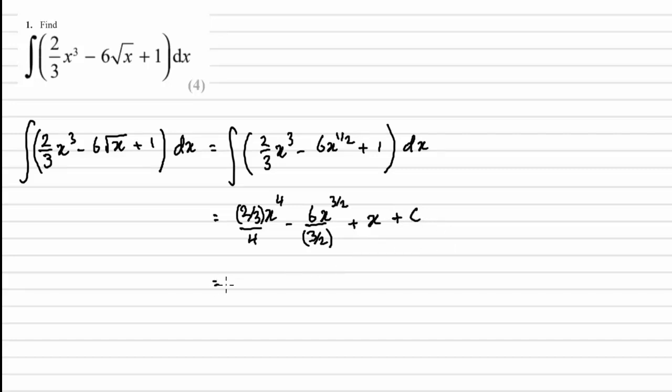So 2/3 divided by 4 is 2/12 x⁴ minus 6 divided by 3/2 is 12/3 x^(3/2) plus x plus constant of integration C. The next thing I'm going to do is I'm going to cancel and simplify. So 2 goes into 12 six times and 3 goes into 12 four times.